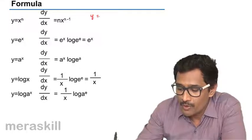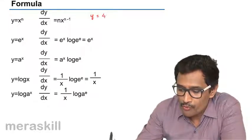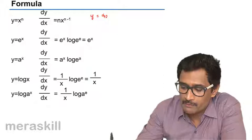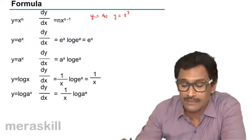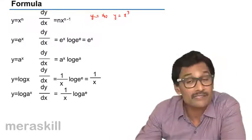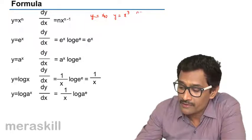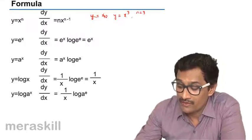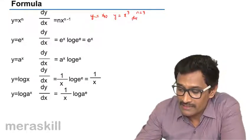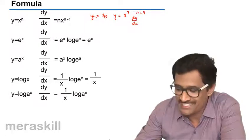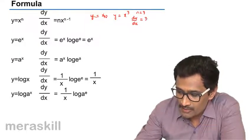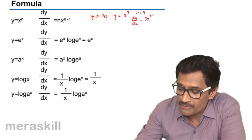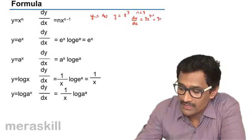Suppose I have a function y equals... Let's take a simple thing. We will take constants later on. y equals x cube. So compare this with this. It's like y equals x raised to 3, so n over here is 3. So in that case, dy/dx, we also call it f'(x), is nothing but n times x, that is 3 times x raised to 3 minus 1, that is 3x².